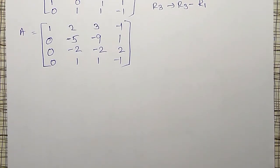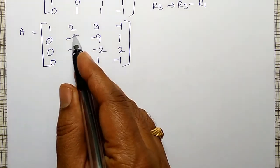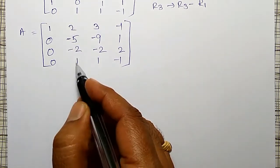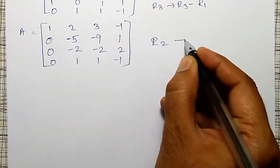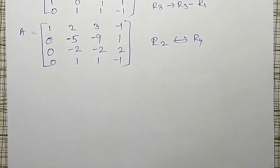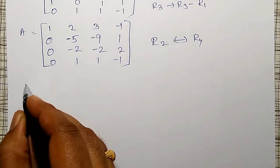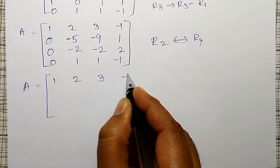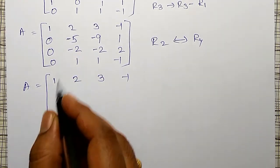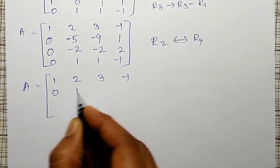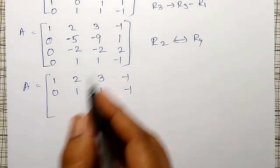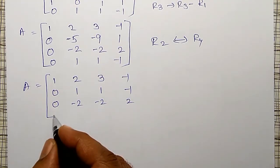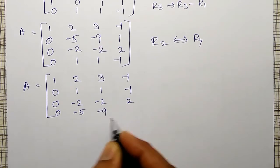Now to make the lower diagonal elements 0, if the pivot is 1 it will be easy. So I will interchange R2 and R4. The matrix becomes: first row 1, 2, 3, −1; second row (from R4) 0, 1, 1, −1; third row 0, −2, −2, +2; fourth row 0, −5, −9, 1.